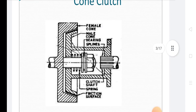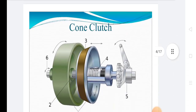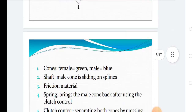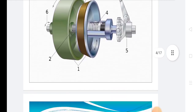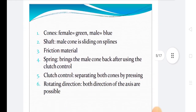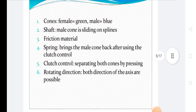This is the diagram of the cone clutch. In this diagram, there is a female cone shown in green and a male cone shown in blue, along with the shaft. The male cone slides on splines. There is friction material on the surface.